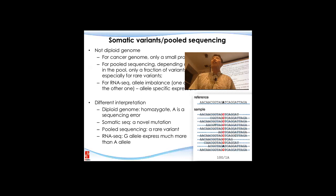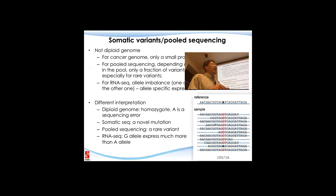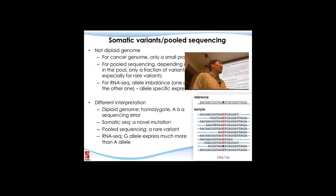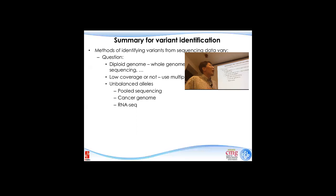So you can see that everything discussed about variant identification is simply for diploid genomes. With different biological designs, for the same data you can derive very different conclusions. For these individual scenarios there will be another series of tools designed to figure out these problems. The summary for the variant identification part: the methods of identifying variants from sequencing data vary, and for different types of biological questions there are different sets of tools.